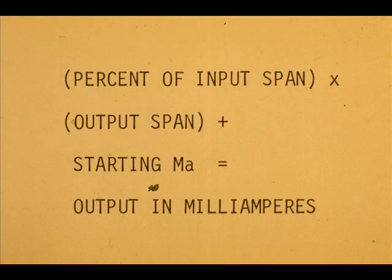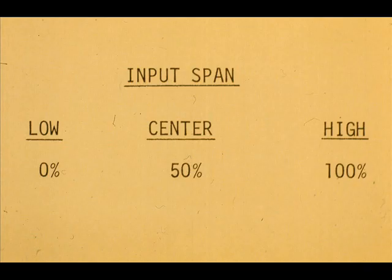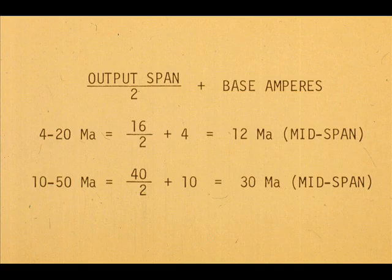In summary, this expression explains the mechanics of calculating the output for either the 4 to 20 or 10 to 50 milliamp range. For any transmitter, there are three outputs we should know using only mental calculations. The 0 and 100 percent span outputs are obvious. For the mid-span output, divide the output span by 2 and add the base or starting current.